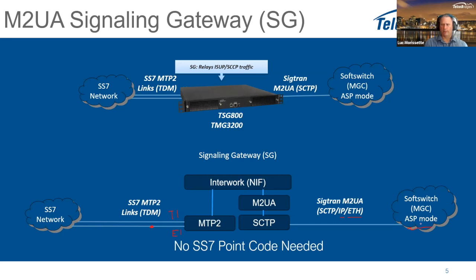In this configuration there is no MTP3 layer above the MTP2 or M2UA — MTP3 is handled at the soft switch. It is the MTP3 layer that handles the point codes. On this signaling gateway, you don't need any SS7 point code. You simply relay the signaling links end-to-end, and the soft switch assigns point codes and attaches links into link sets.